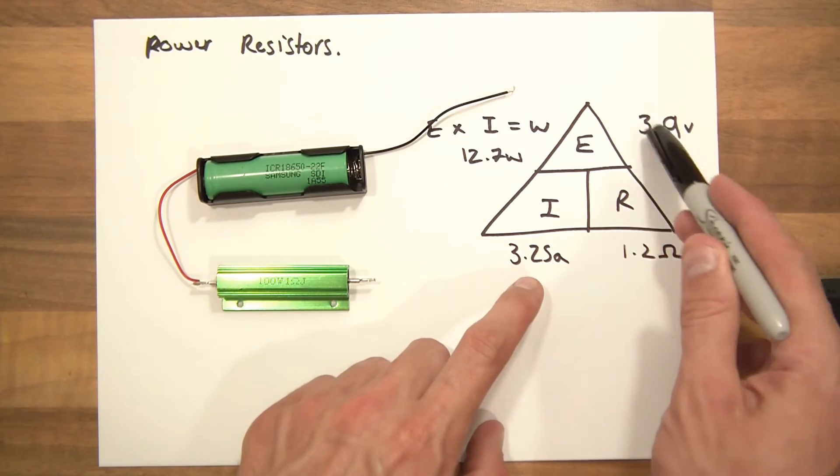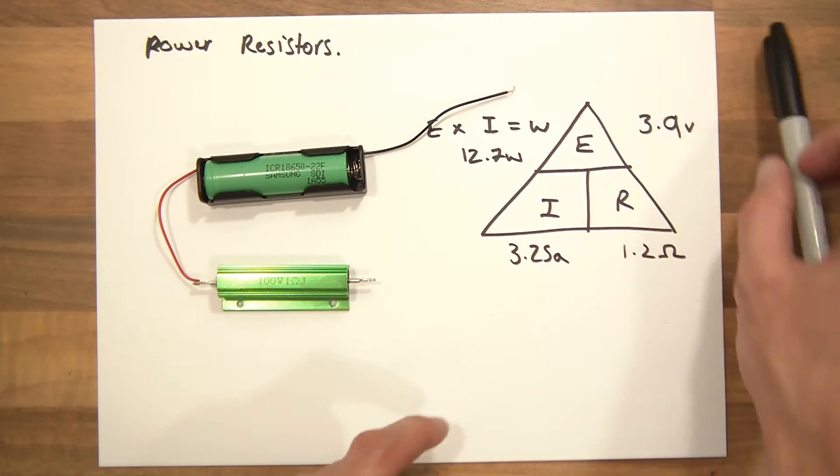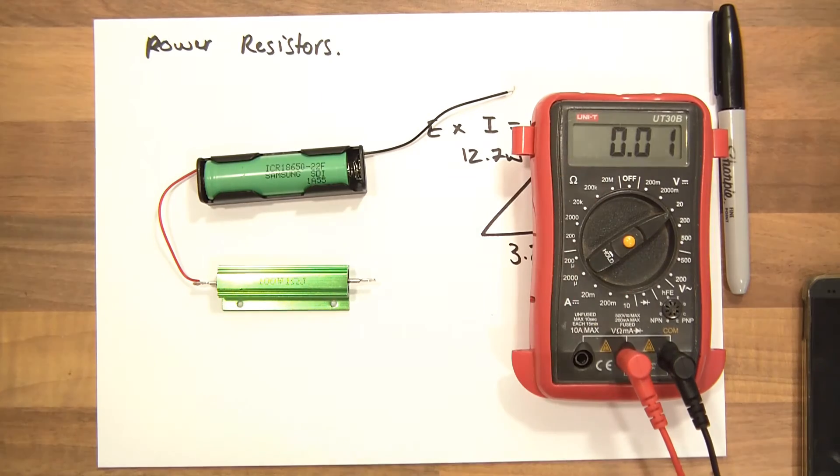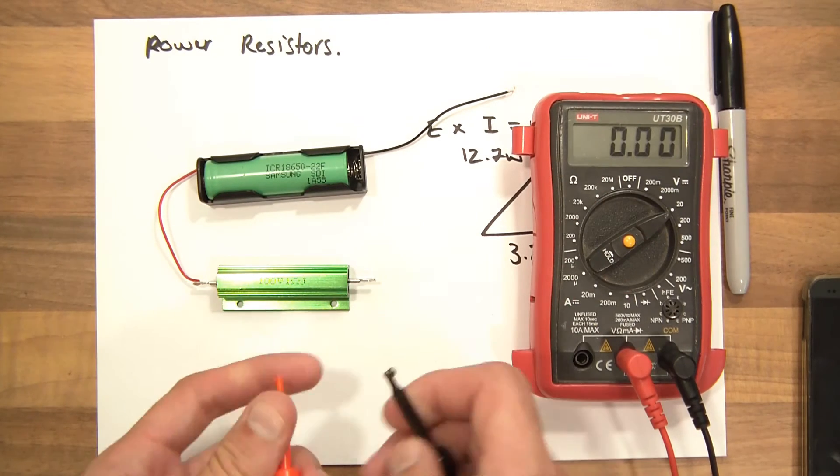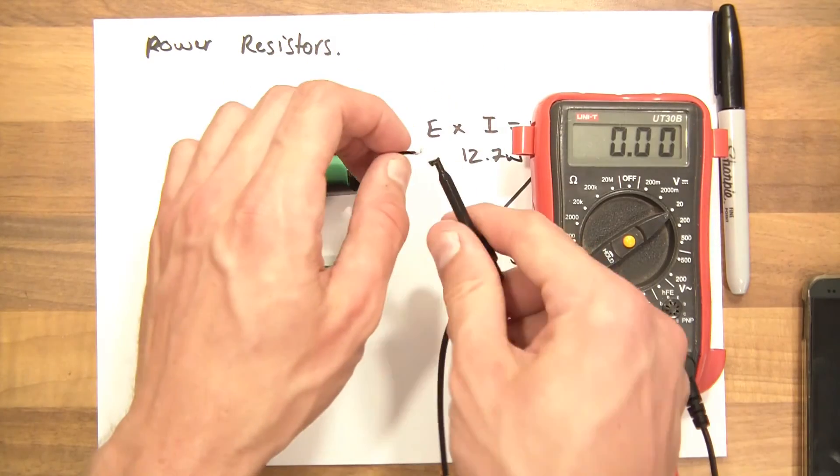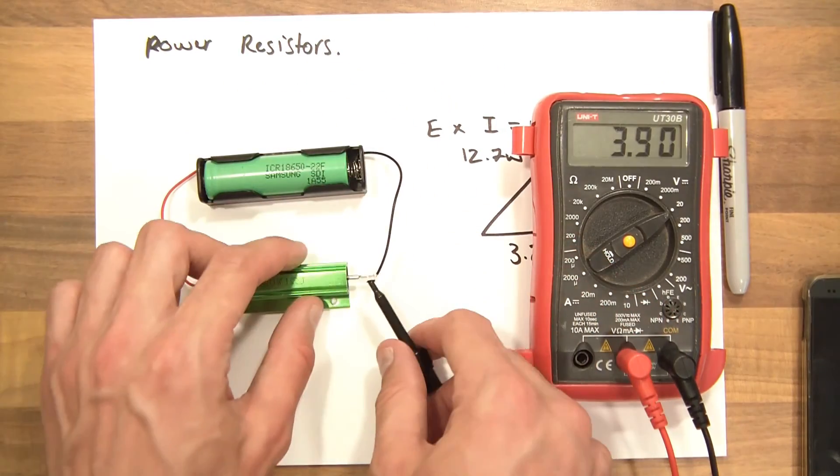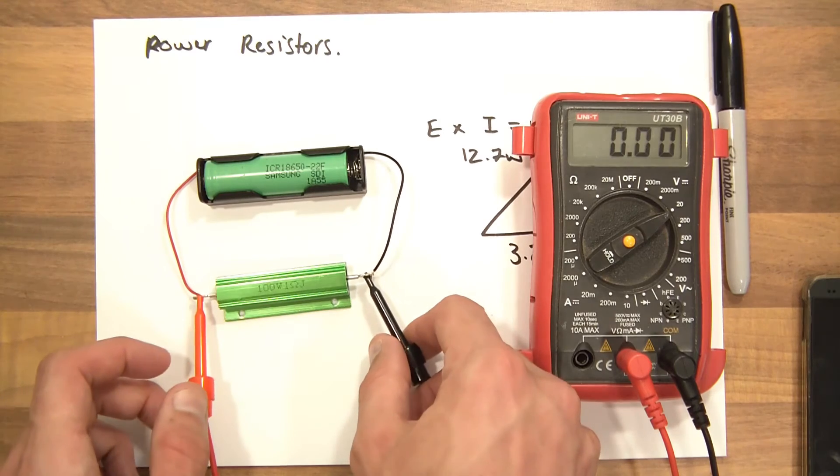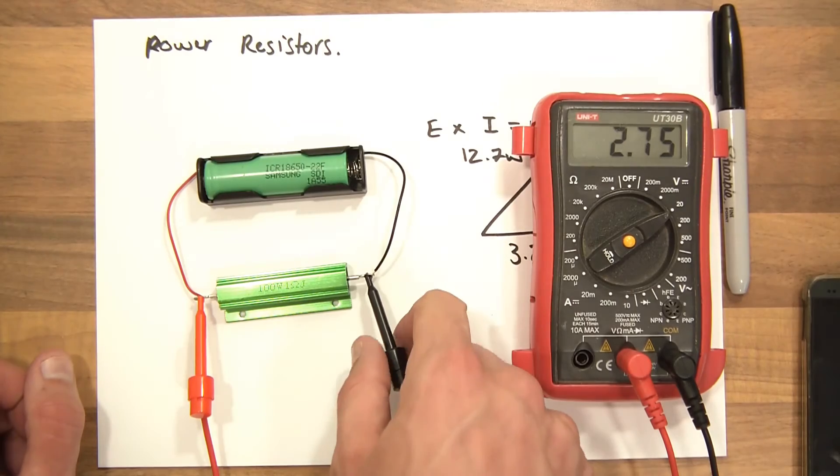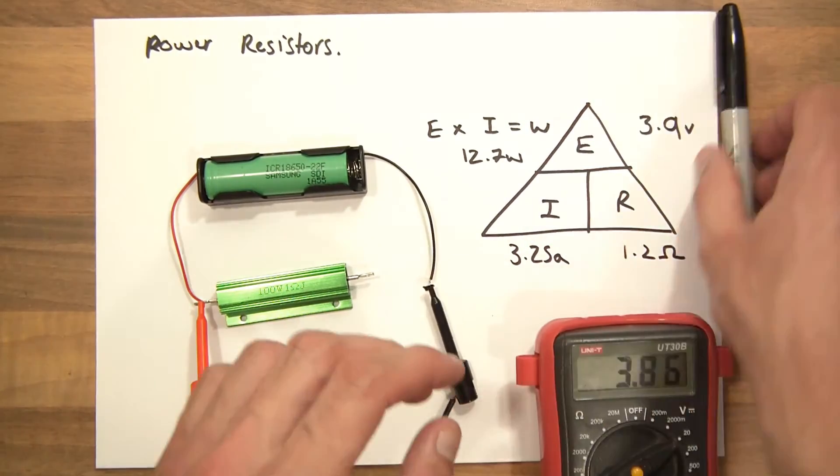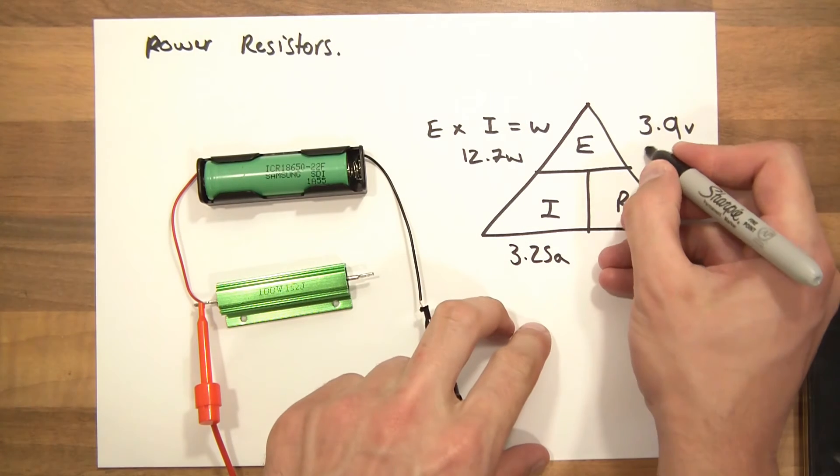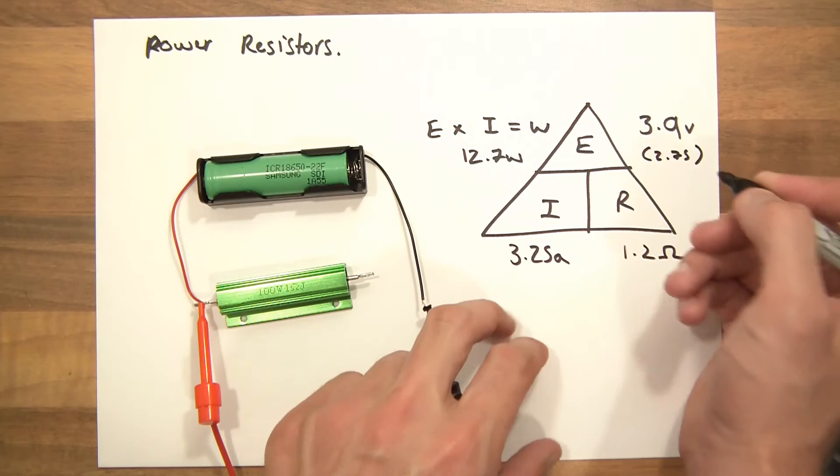So I'll just connect this up. See, we expect 3.9 volts, but it's going to be less. So, I'll just connect this up. Anode to the anode, and cathode to the cathode. And the actual voltage is 2.75. So, 2.75. That's quite a drop.